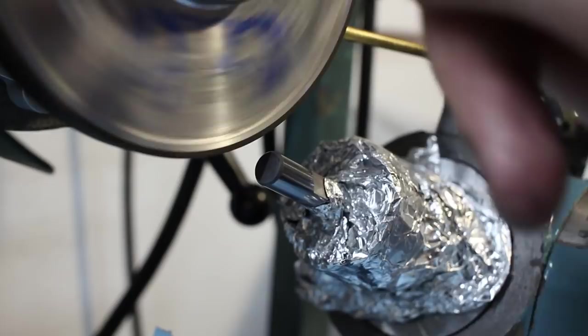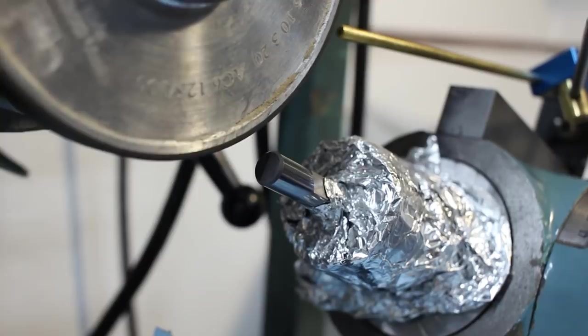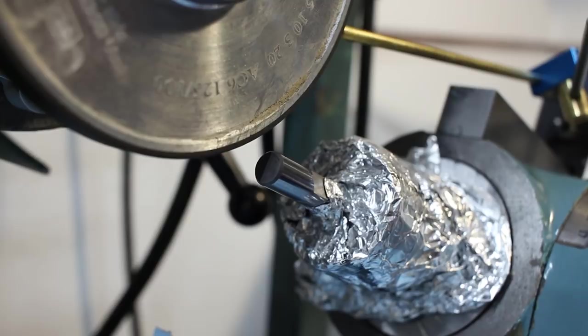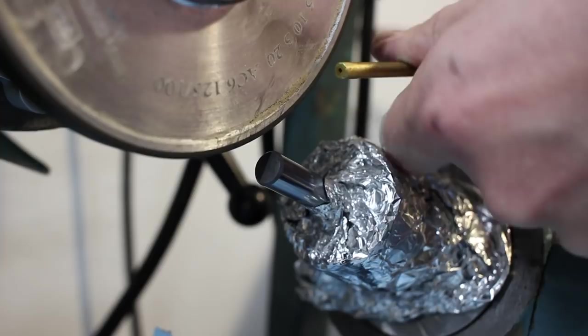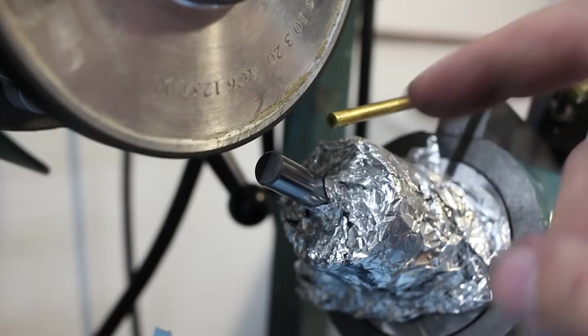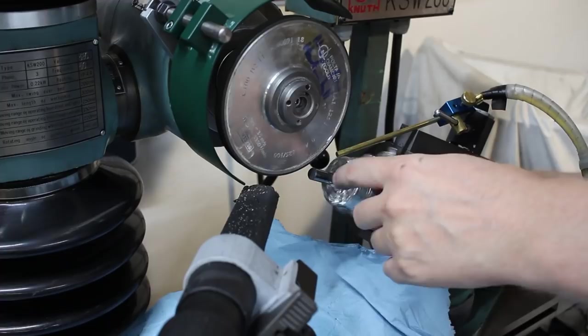So we try to get it as close or over center as possible. I'm going to take a fairly deep cut. I'm climb cutting. The wheel is going this direction, work is traveling this direction. This works because this grinder has a cable drive for the table, which is backlash free.